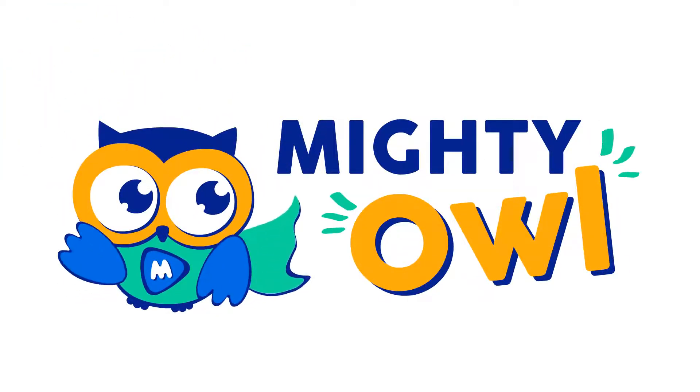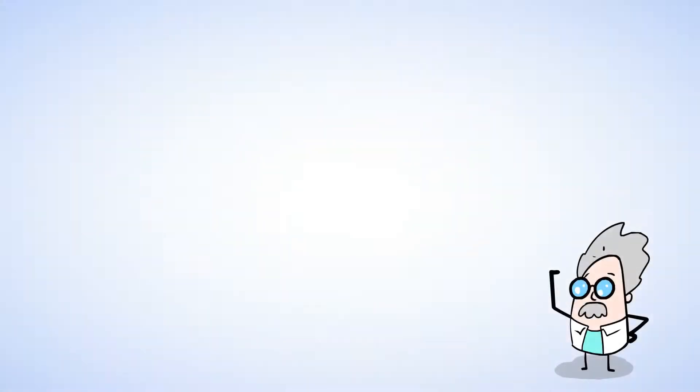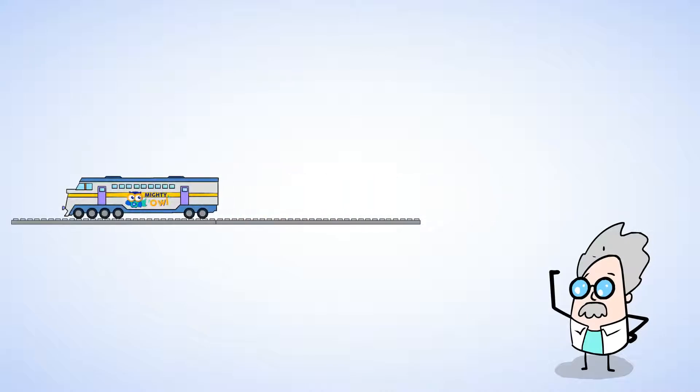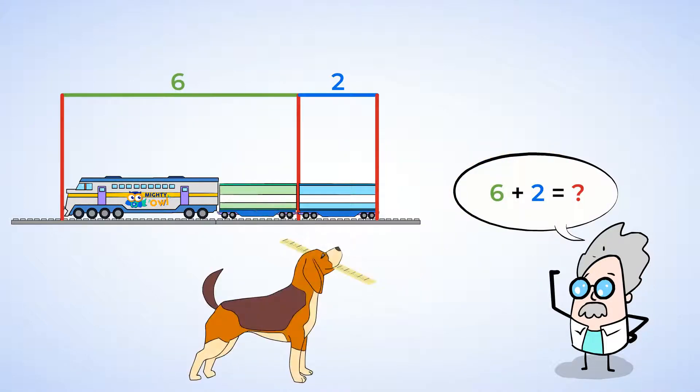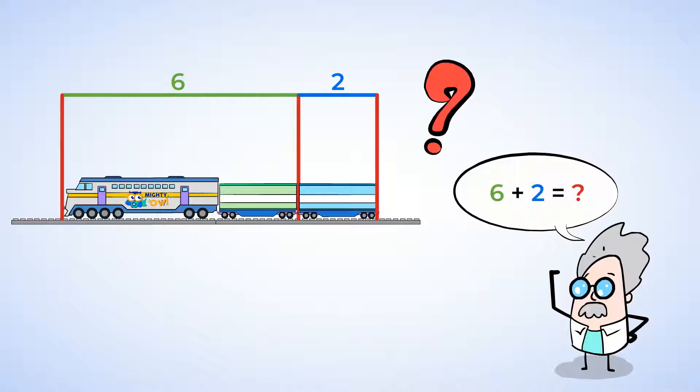Hello, this is Mighty Owl. Imagine you are building a super mighty train, and you're using your ruler to help add and subtract lengths as you build it. First, the train is 6 inches long. Then you add a car that is 2 inches long. Now you're going to use your ruler to add 6 and 2 and oh no! Your dog runs in, grabs your ruler, and leaves. Oh, he must have thought it was a toy. What are you going to do now?